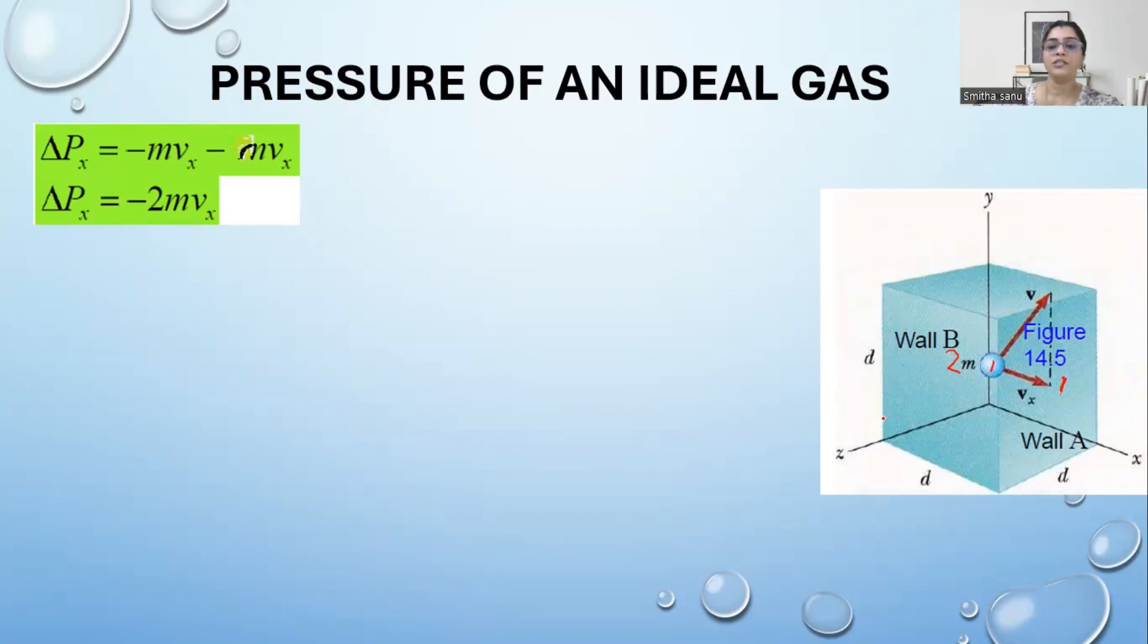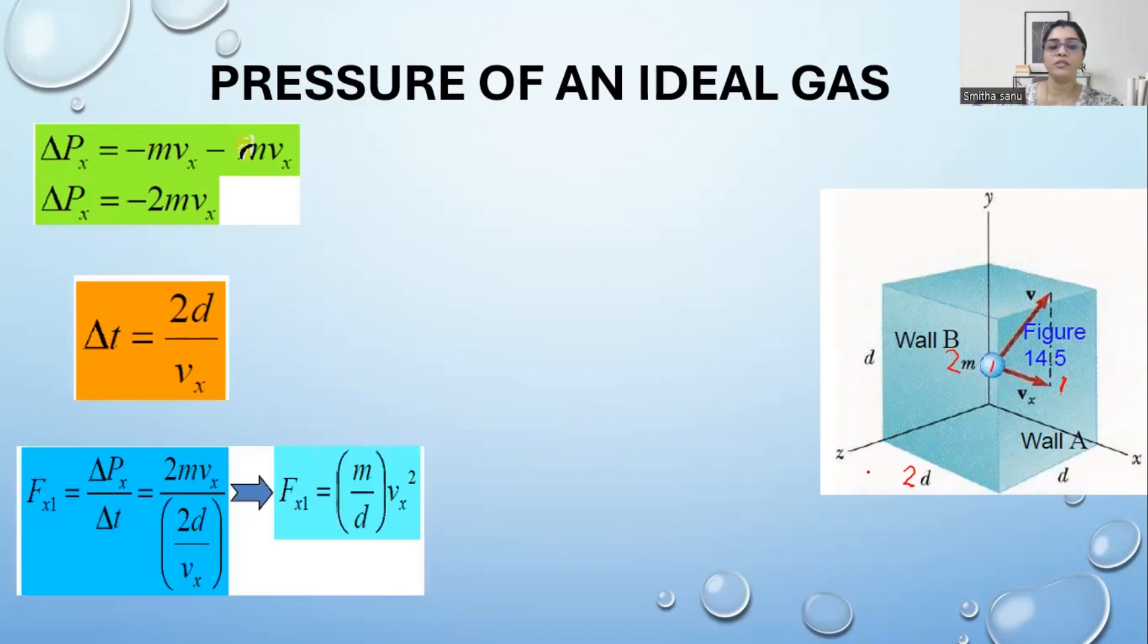The next step is to find the change in time. You know that time is distance over speed. For the molecule moving from 2 to 1 and 1 to 2, the distance covered is 2d and the velocity is vx. So change in time is 2d over vx. If I divide both of these, the rate of change of momentum is force. I divide equation 1 by equation 2 to get the equation for force of one single atom moving along x-axis.